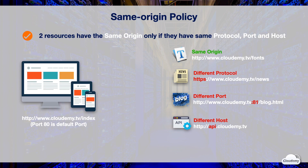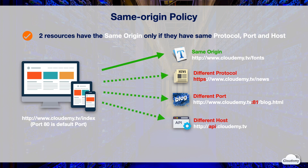Let's look at the example of the same origin policy here. You have one origin which is the cloudami.tv slash index web page on the left. It's trying to access data from other web resources on the right. The first resource cloudami.tv slash fonts on the right has the same origin as the cloudami.tv index page. Both resources have the same HTTP protocol, the same default port which is port 80, and the same host which is www.cloudami.tv. Therefore, cloudami.tv index page can access the data from cloudami.tv slash fonts. All other web resources are considered as different origins. The second resource uses HTTPS protocol which is different from HTTP. The third resource uses port 81 which is different from the default port 80. The fourth resource api.cloudami.tv uses a different subdomain from the www subdomain. The same origin policy restricts cloudami.tv index page from accessing the data from these resources.